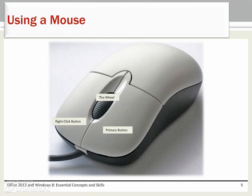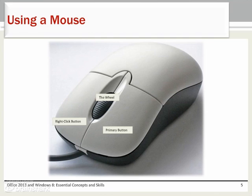A mouse is another input device for communicating with the operating system. Mice vary in features, but most come with the ability to left and right click, some come with a wheel in the center, and some have additional features. When directions ask you to click on an icon on the screen, it is referring to pressing and releasing the primary button located on the left side of the mouse.